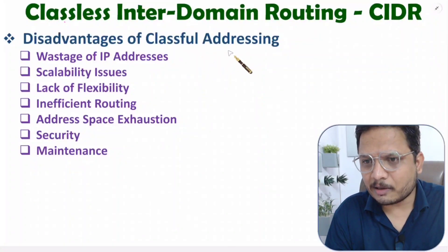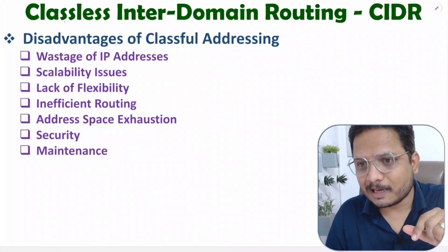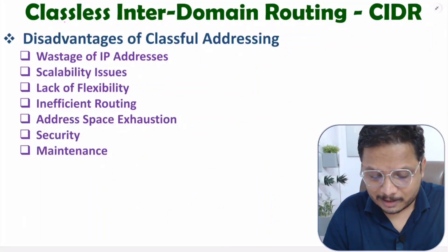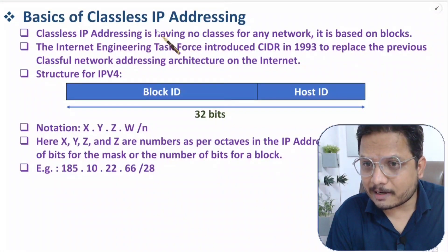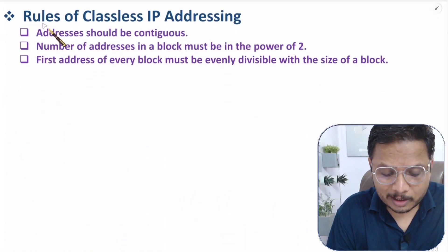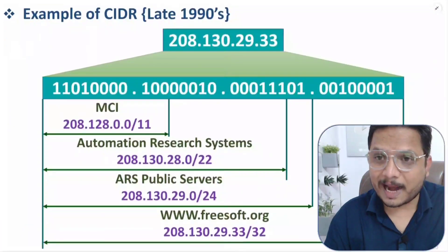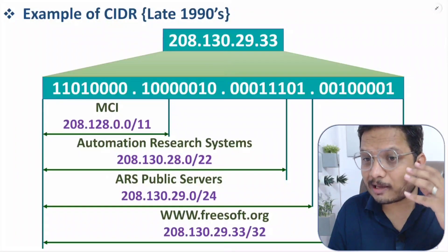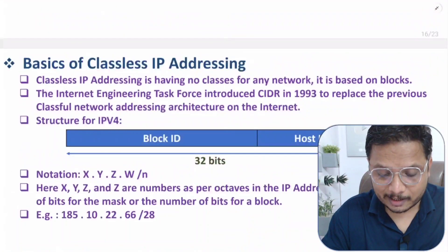First I'll be explaining the disadvantages of classful addressing. We have seen classful addressing with five classes: Class A, Class B, Class C, Class D, and Class E. After that I'll explain the basics of classless IP addressing with a practical example, then the rules for classless IP addressing, and finally a practical computer network example.